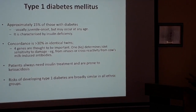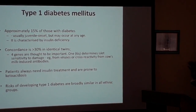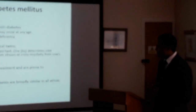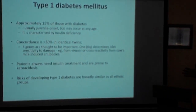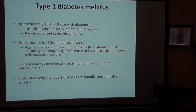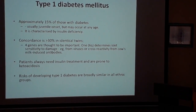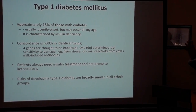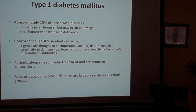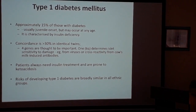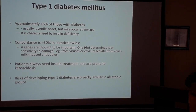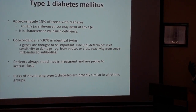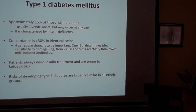The body develops antibodies that actually kill the insulin-producing cells. People with Type 1 have a deficiency — a lack of insulin production — and this can lead to what we call ketoacidosis, which has historically been a major killer of Type 1 diabetics.